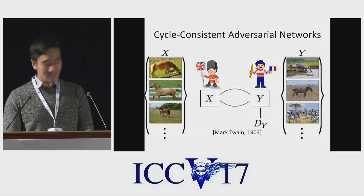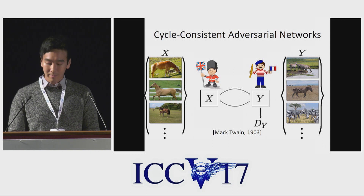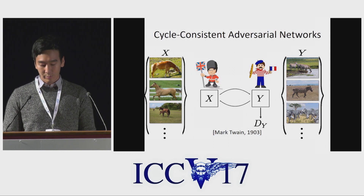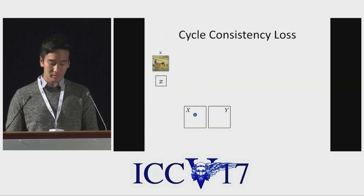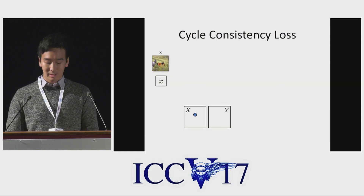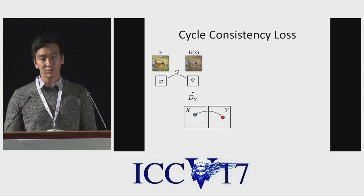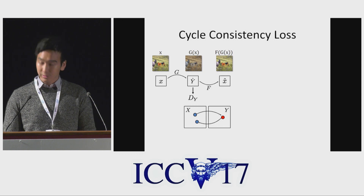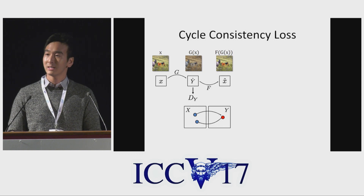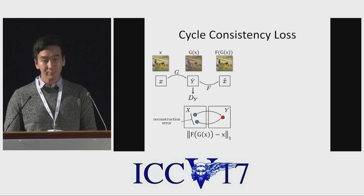The same story here. If we translate a horse to a zebra and then translate it back, we should get the same horse we started with. Here's how we implement it: given an input image X, we first apply mapping G to translate into domain Y. Then we apply inverse mapping F to reconstruct the input image X. We simultaneously optimize G and F to minimize the reconstruction error.